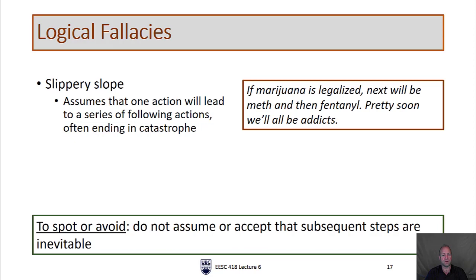Slippery slope assumes that one action will lead to a series of following actions, usually ending in some catastrophe. This appears in all sorts of political debates where one party argues for the status quo and another argues for change. For example: 'Marijuana is legalized — next will be meth, then fentanyl, and pretty soon we'll all be addicts.' There's nothing that says because cannabis is legal today, meth will be legal tomorrow. We need to evaluate whether there is evidence to suggest any of those subsequent steps are actually inevitable, and assess them on their own merits.